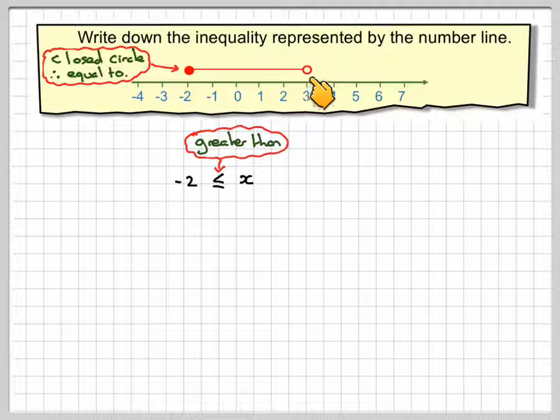Now consider the other dot here, which is at 3. Now this is to the left of that dot, so it's going to be less than.